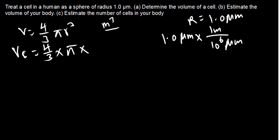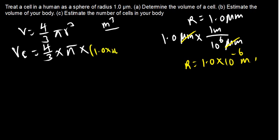The micrometer units cancel, so the radius equals 1.0 × 10⁻⁶ meters. We then substitute into the formula: (4/3) × π × (1.0 × 10⁻⁶)³. Using the calculator: 1.0 exponent negative 6, raised to the power 3, times π, times 4 divided by 3.